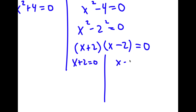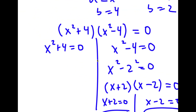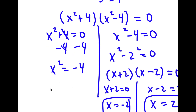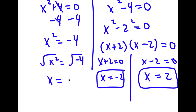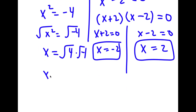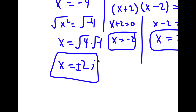From x plus 2 equals 0, x equals negative 2; from x minus 2 equals 0, x equals positive 2. For x squared plus 4 equals 0, subtracting 4 gives x squared equals negative 4. Taking the square root of both sides, x equals the square root of 4 times the square root of negative 1, which is 2i. So x equals positive or negative 2i — two more solutions.